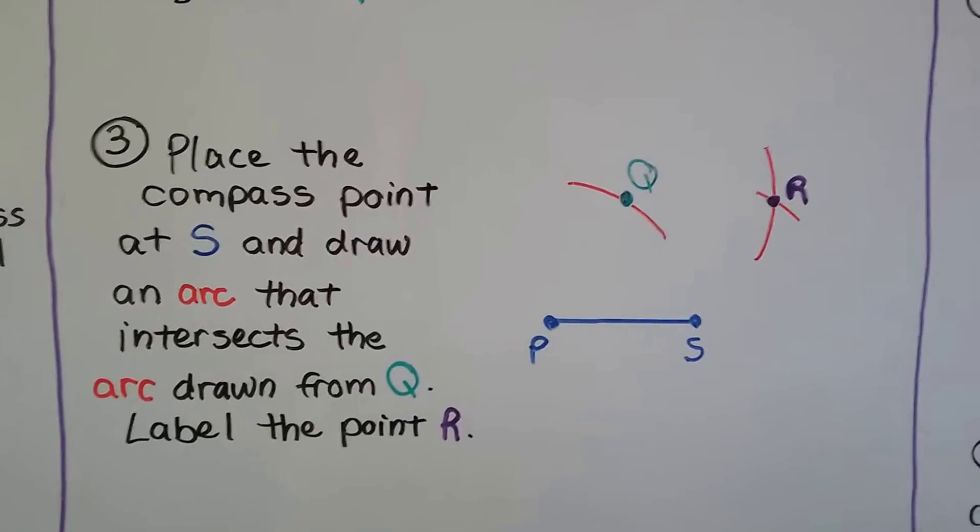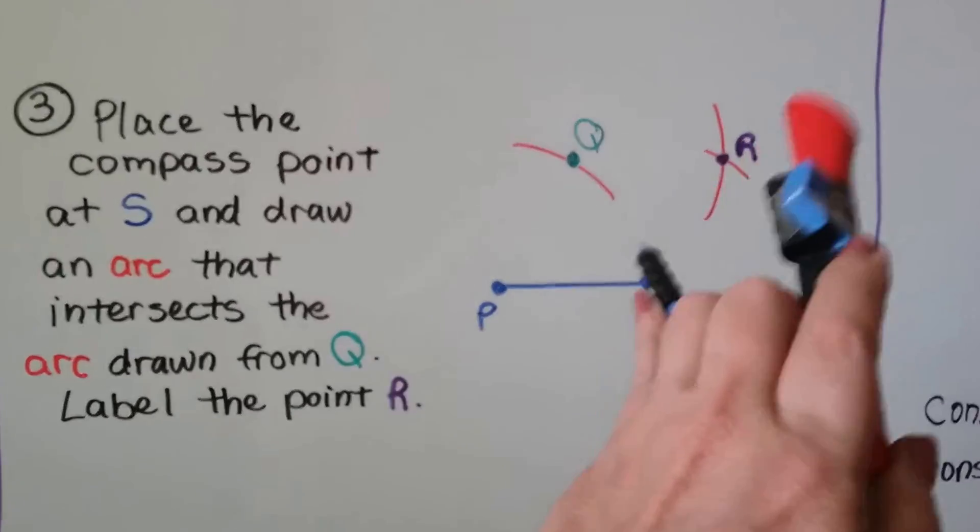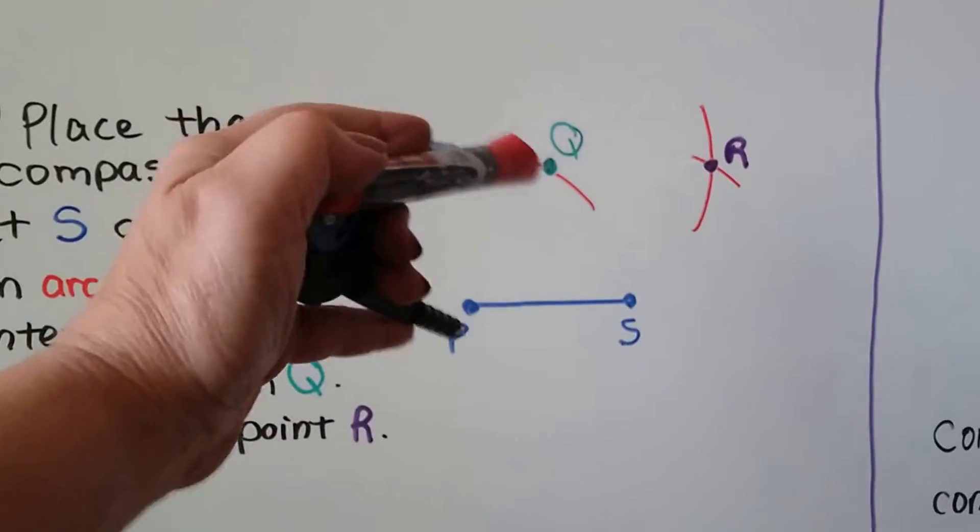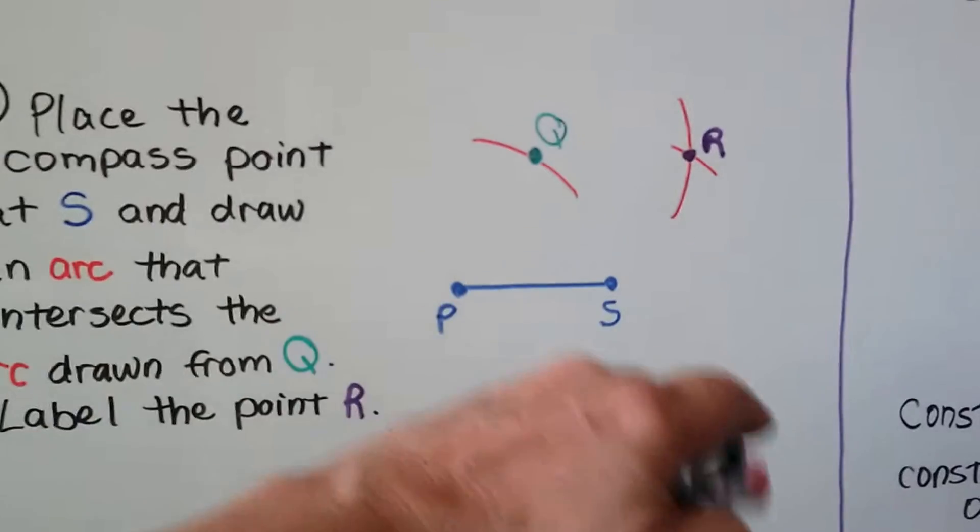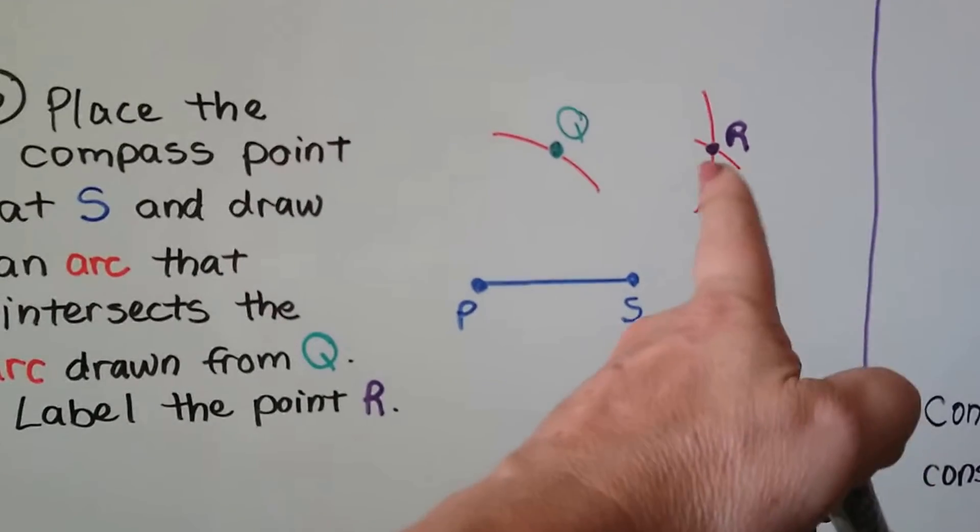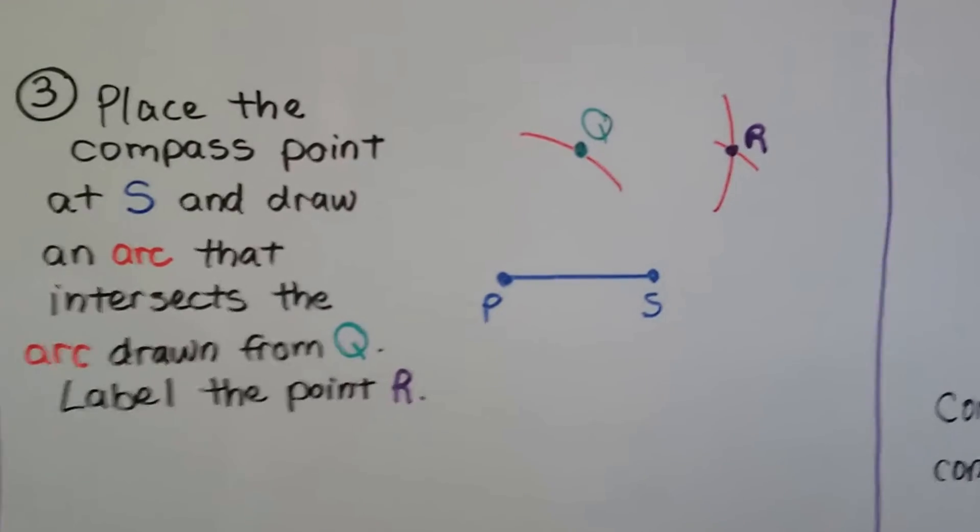Now we place the compass point at S and make another arc with the same compass setting the whole time, this PS length. So we're going to make an arc, put a point Q, make another arc, and then from S, we're going to make another arc, and where they intersect, that's going to be point R.